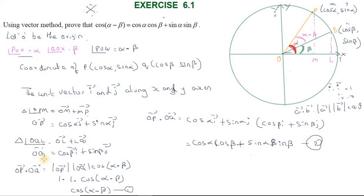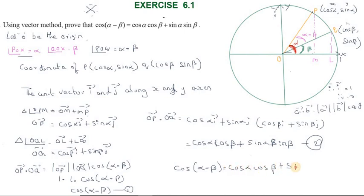From equations 1 and 2, since both equal OP vector · OQ vector, we have: cos(α − β) = cos α cos β + sin α sin β. Hence proved.